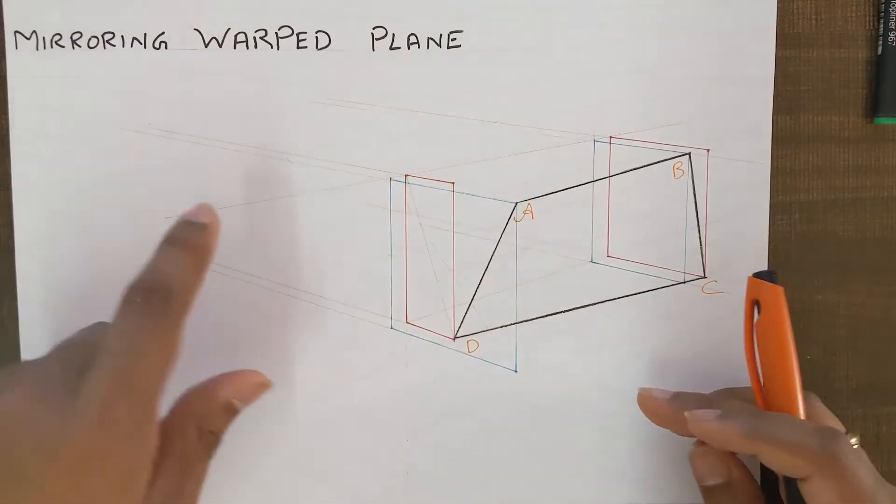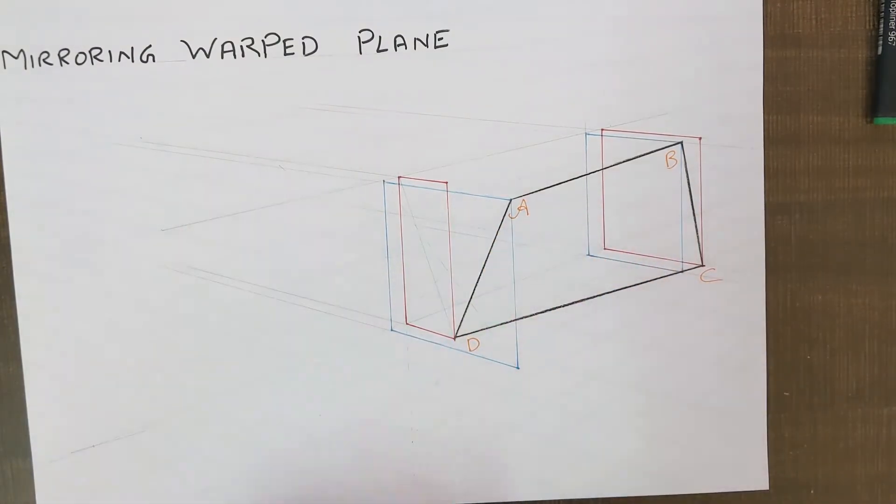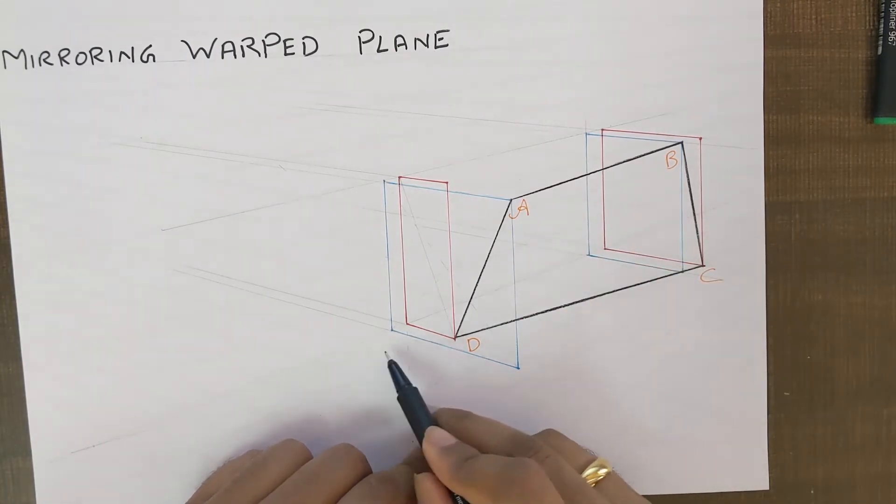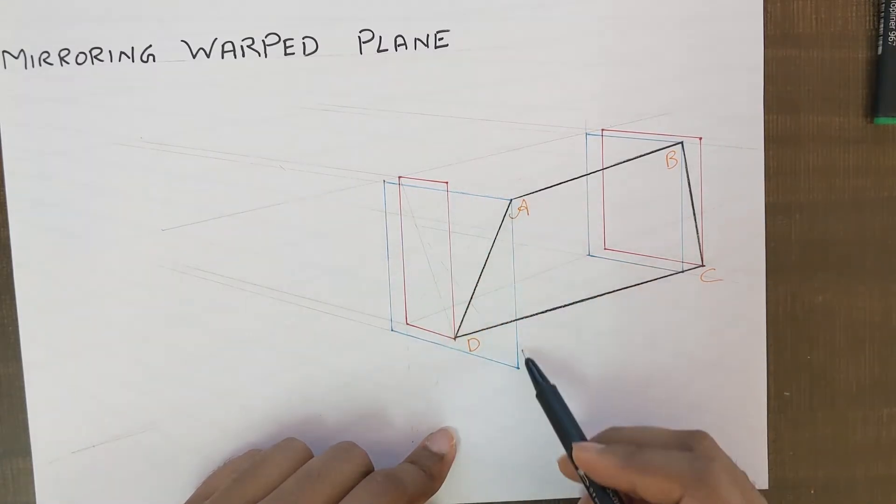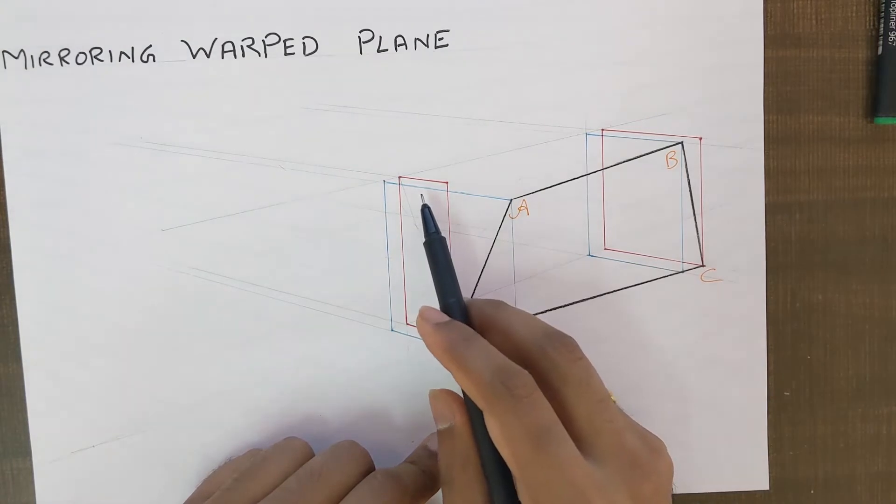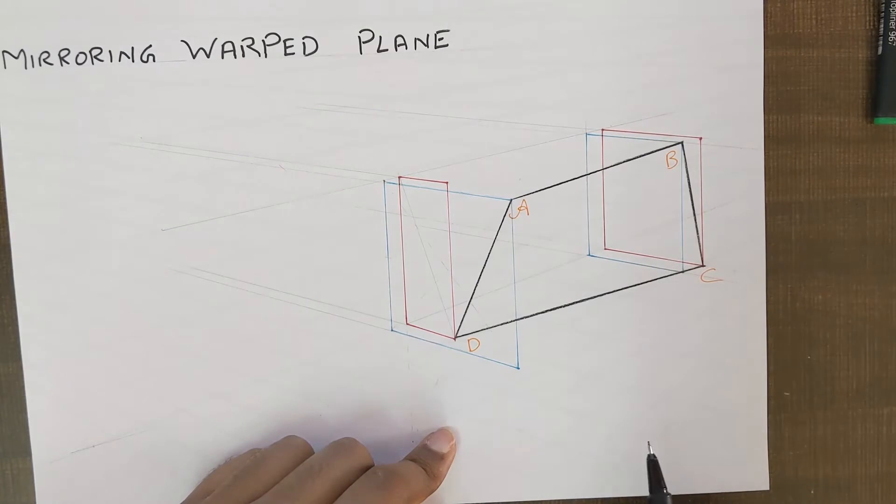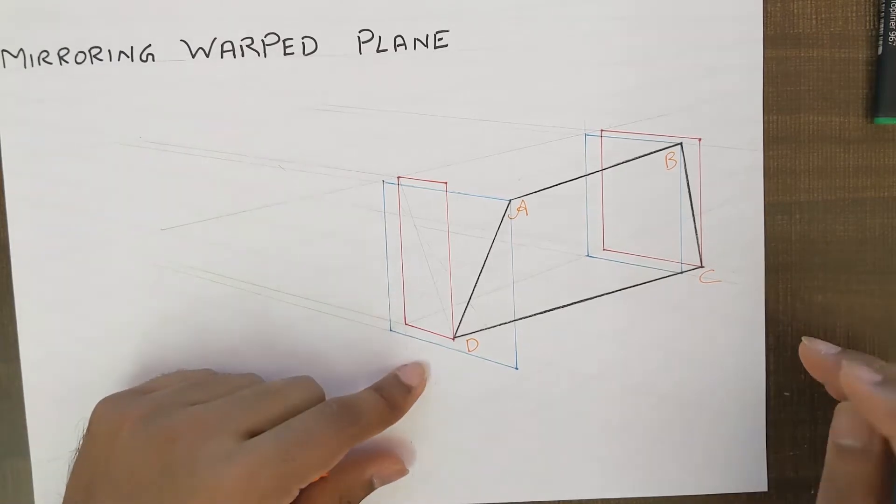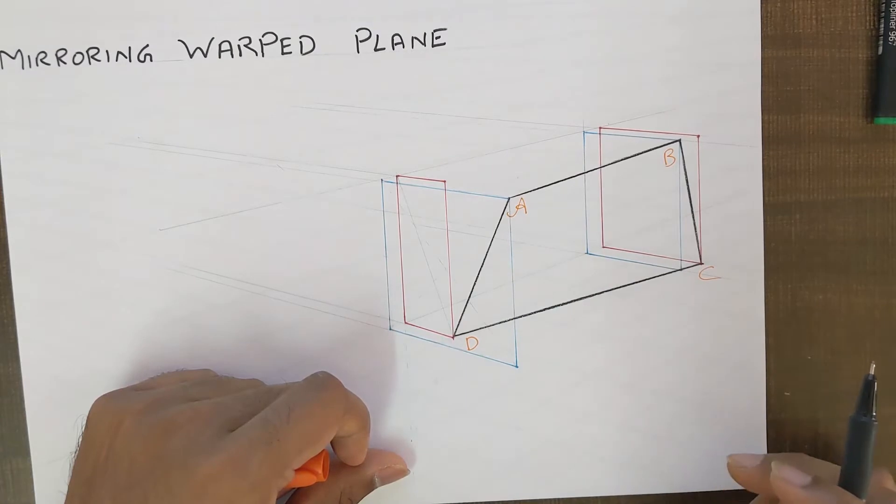Whereas in the case of a warp plane, the points A and D they are not on the same plane. As you can see there is a slight offset which is clearly seen in the two planes that I have drawn here, the sand color one and the red color one. Similar is the case with the points B and C as well. So things are a bit complicated over here and you will encounter these sort of planes and they have to be mirrored in perspective.